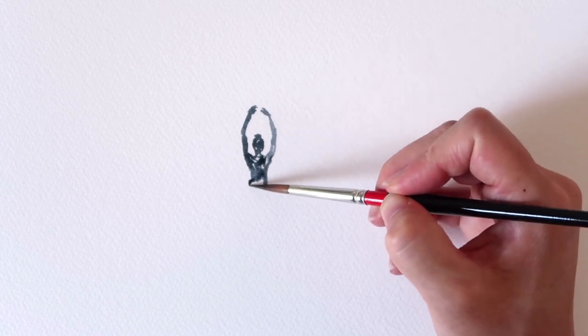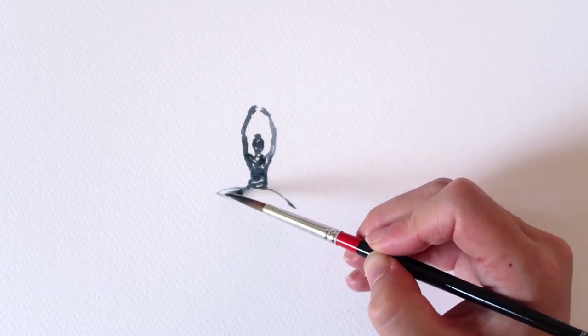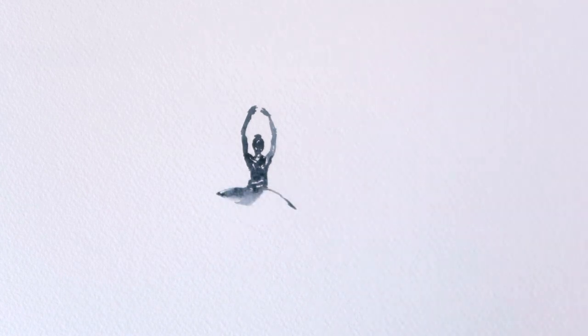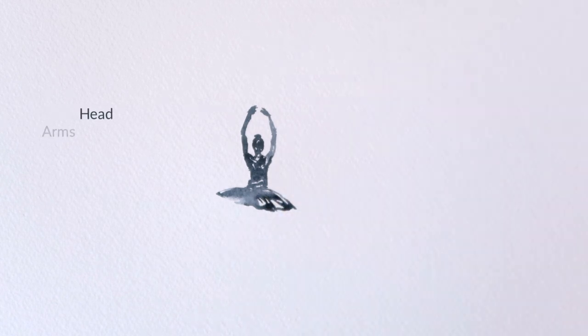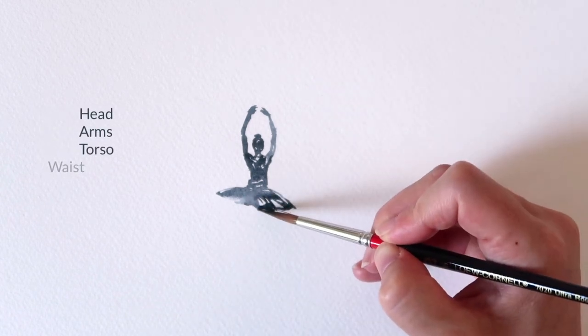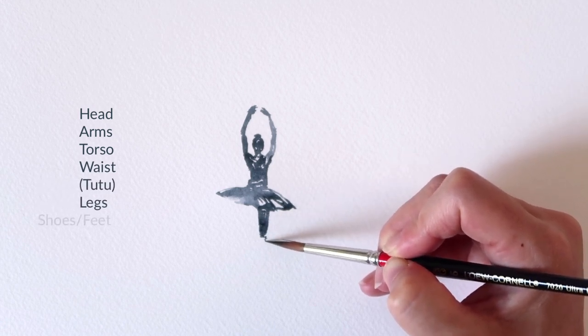Even if we can't tell somebody exactly what looks strange, it just kind of looks off. And so I like to use reference photos. In these figures, I always start with the head and then I move to the arms, the torso, and then obviously the waist if there's like a tutu.